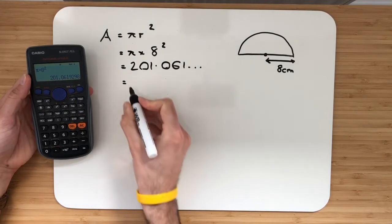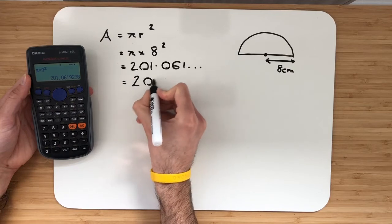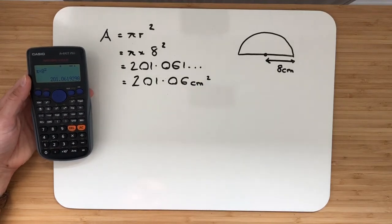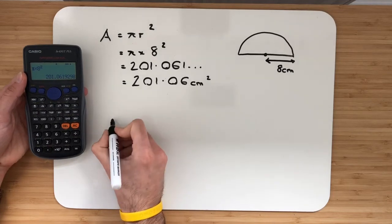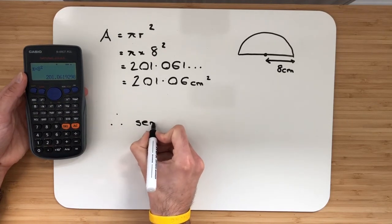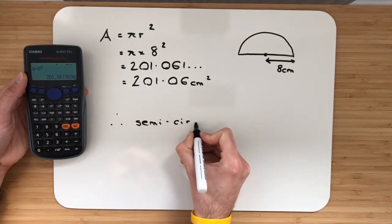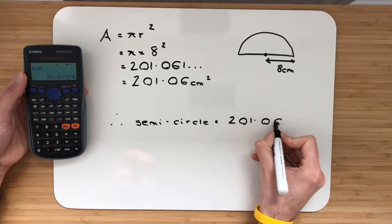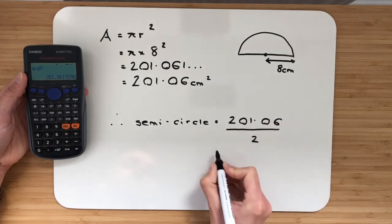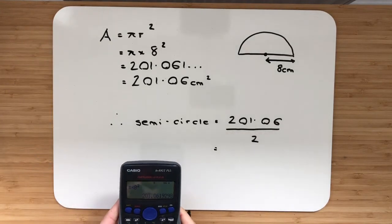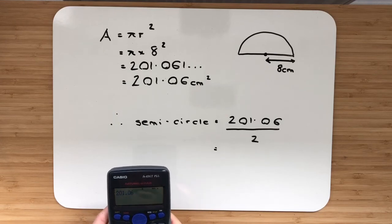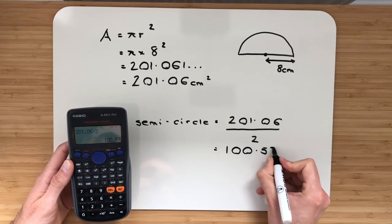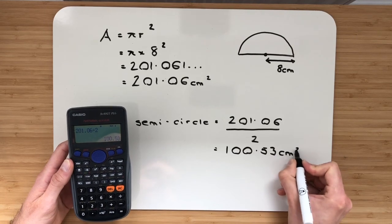Again we're going to round to two decimal places unless told otherwise. 201.06 and that is square centimetres. That's a full circle. We want a semicircle. Therefore, semicircle is equal to 201.06 and we're going to divide that by 2. So we'll take our previous answer, 201.06, divide that by 2 and that will leave me at 100.53 square centimetres.